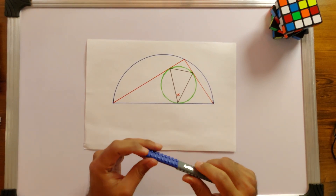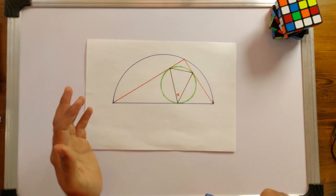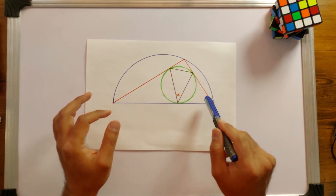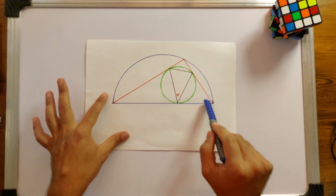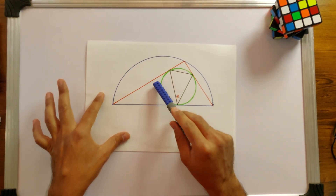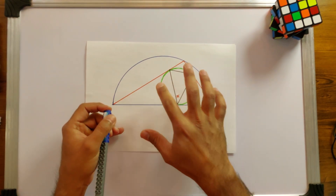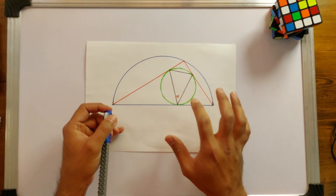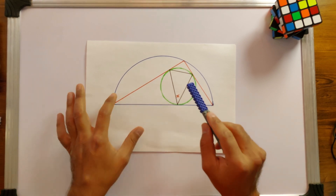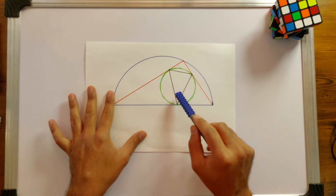The problem setup is simple: we have a semicircle with a triangle inscribed inside it, with the diameter of the semicircle being one of the sides of the triangle. Inside this triangle there is a smaller circle inscribed, which is tangent to all three sides. Inside that circle there is another triangle inscribed. Our mission is to find the angle X.